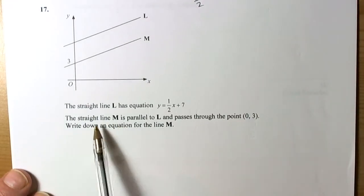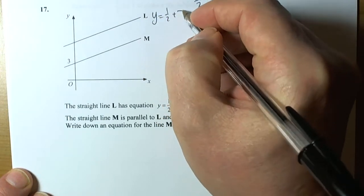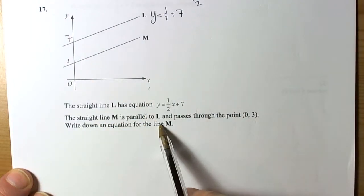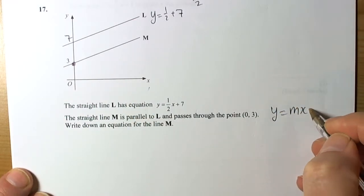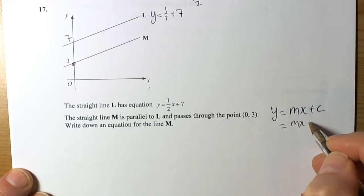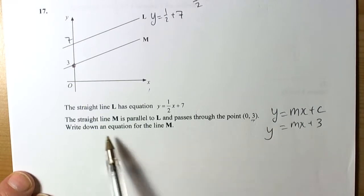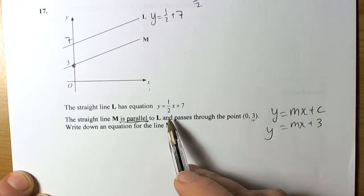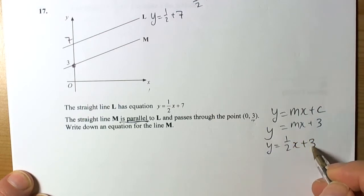Line L has equation y equals a half x plus 7, so it crosses at 7. Line M is parallel to L and passes through (0, 3). Parallel means same gradient, so we have a half x, and the intercept is 3. The equation of line M is y equals a half x plus 3.